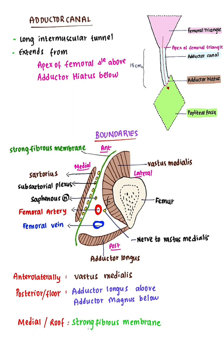The medial boundary, or roof, is formed by a strong fibrous membrane stretching across from the anterolateral boundary to the posterior boundary. Over the roof, sartorius muscle is present — the roof is overlapped by sartorius.